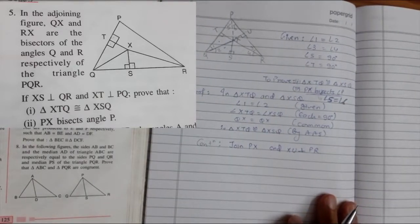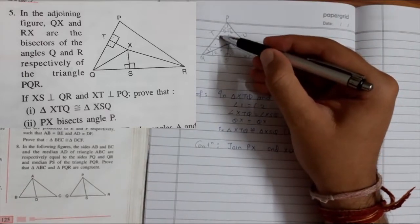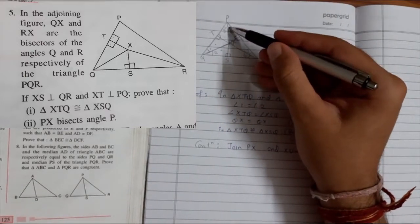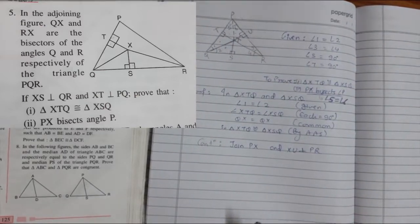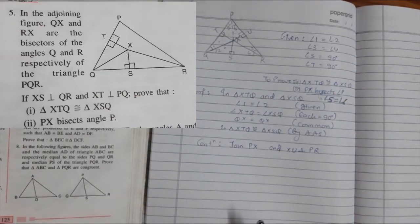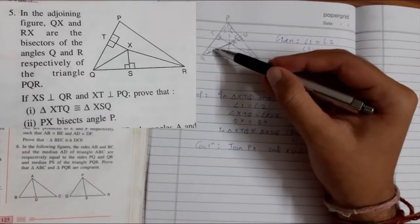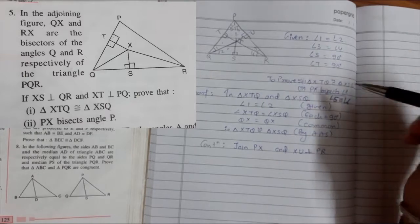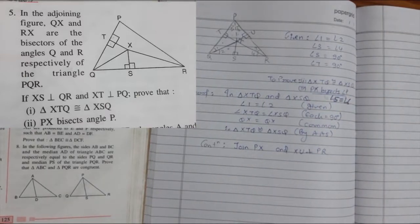So this thing is done. Let's think about these two triangles. We have this 90 degrees, we have this common, but we don't have any third thing which is equal. So for that, we have to think logically why they have given the first part. Normally what happens is first part is always helpful in the second part.